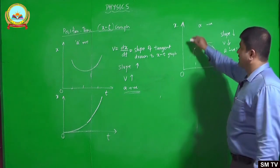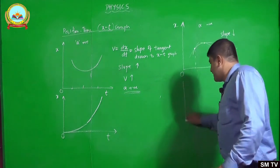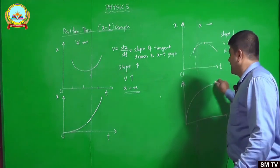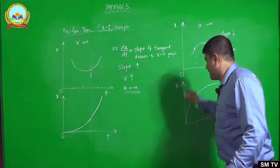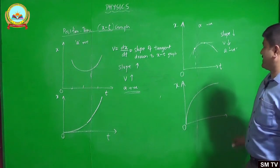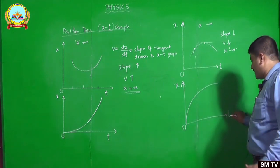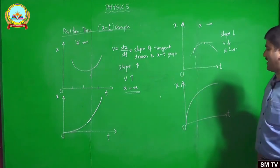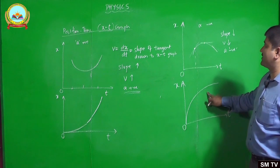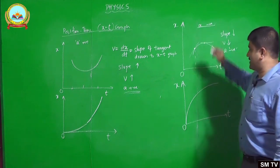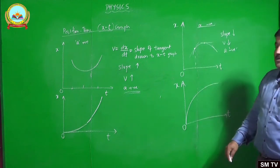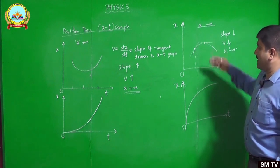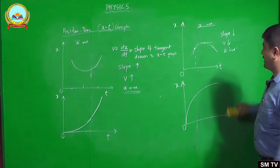When the slope goes from a positive value to zero, then to negative — slope is decreasing, meaning velocity is decreasing. When the velocity of the object decreases, acceleration is considered as negative. This graph represents a negative acceleration. You can also draw the position-time graph for negative acceleration in another way.